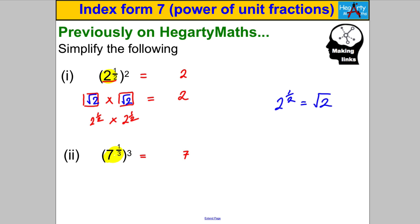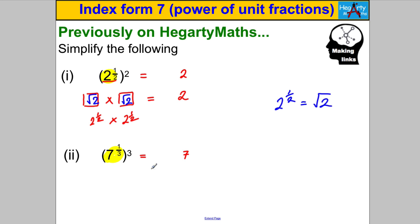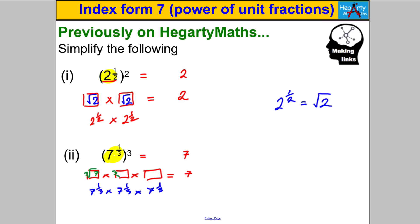Could two to the half be negative root two? With square roots you always get a positive and negative answer, but we call that negative two to the half, i.e. negative root two. So whenever you see two to the half, assume it's the positive square root. Now for seven to the power of a third: cubing something means it multiplies by itself three times to give seven. That something must be the cube root of seven — the only number that cubes to give seven. So seven to the third equals the cube root of seven. These are called unit fractions because there's a one on top.